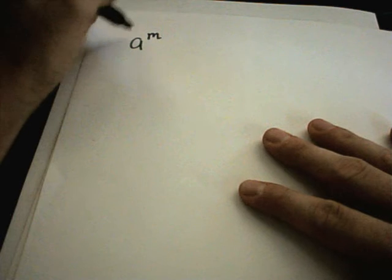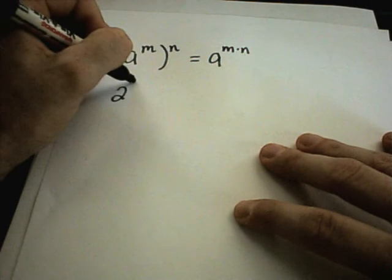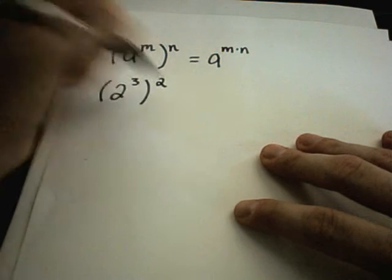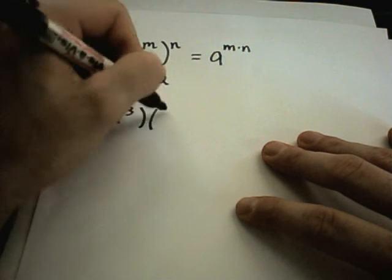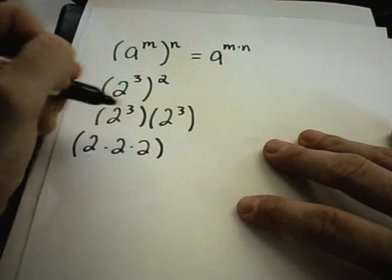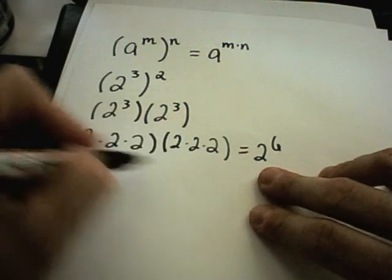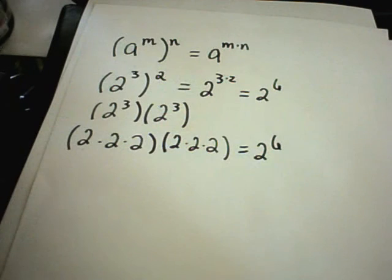The next property: if you have a raised to the power of m and then raise that to the power of n, you multiply those two powers m and n together. For example, 2 to the third raised to the second power — since something squared means multiplied by itself twice, you get two times two times two, twice over. Counting all the twos gives six, the same result as multiplying the powers at the beginning: 2 to the sixth.